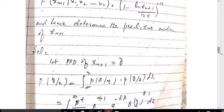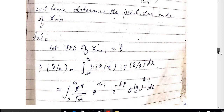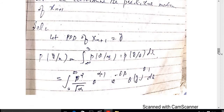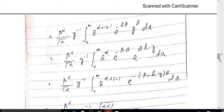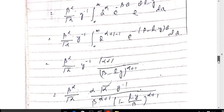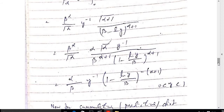The posterior predictive density of y = x_(n+1) is p(y|x) = integral from −∞ to ∞ of p(theta|x) · p(y|theta) d theta. Substituting the posterior gamma distribution and the power distribution density and making simplifications, we obtain p(y|x) proportional to (alpha/beta) · y^(−1) · [1 − log(y)/beta]^(−(alpha+1)).